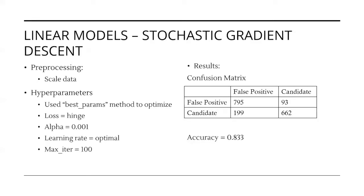The last linear model was built using the stochastic gradient descent algorithm. This time, we only needed to scale the predictor data. We then found the optimal hyperparameters to be a loss function equal to hinge, alpha equal to 0.001, the learning rate set to optimal, and the maximum number of iterations equal to 100. This resulted in an accuracy of 0.833 with the associated confusion matrix.